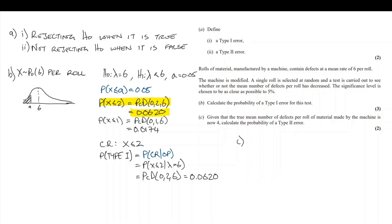Next, we're told that the true mean number of defects per roll made by the machine is now 4. That's the new parameter. We're asked to calculate the probability of a type 2 error.